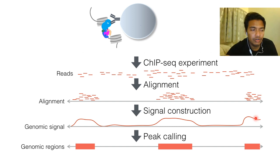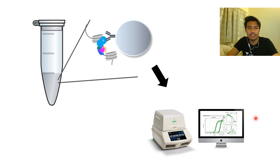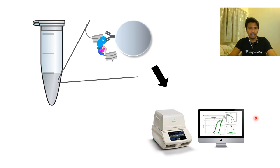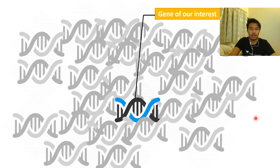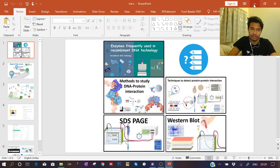If you have a targeted hypothesis — whether your transcription factor binds to a specific gene — rather than a global question, you can do ChIP-qPCR. After pulling down the chromatin, instead of sequencing, you amplify your gene of interest from the pull-down fraction by quantitative PCR and look for it specifically. This is targeted, not global level. So now our next part is techniques to detect protein-protein interaction.